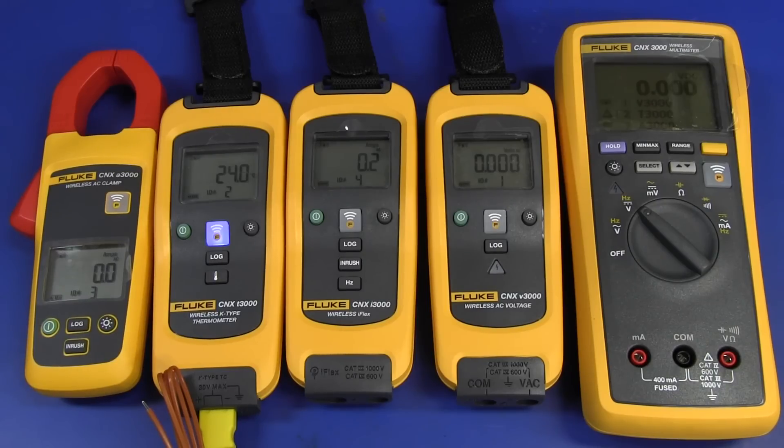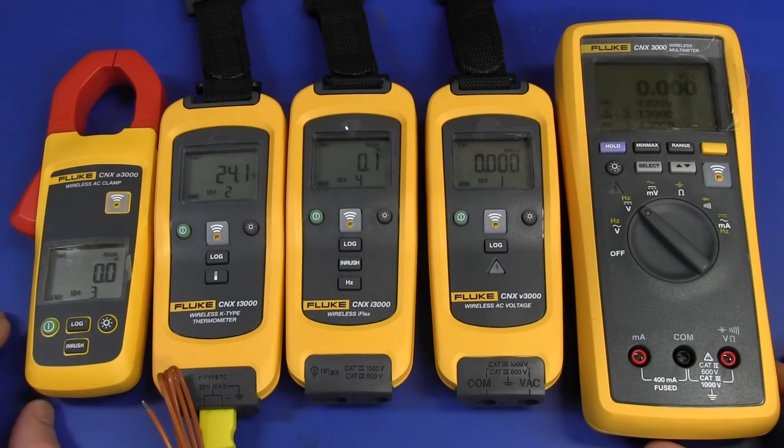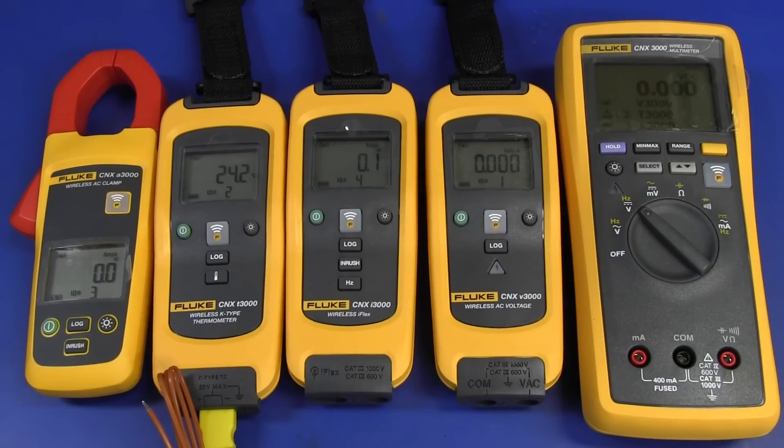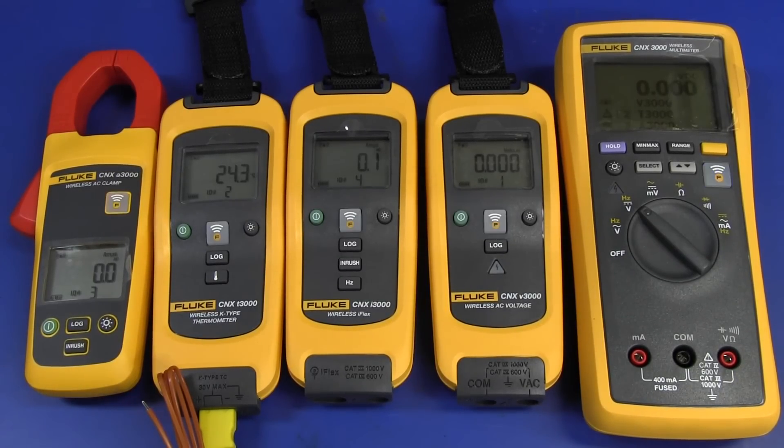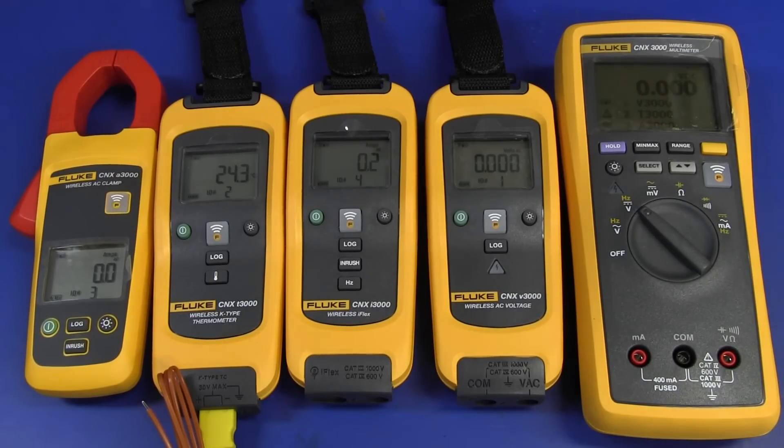So there you have it. That's the Fluke CNX 3000 Wireless Multimeter Series. Very, very funky. Yeah, haven't used them yet, so I can't give you a review on these things yet. But very interesting, very well built, as you'd expect from Fluke. Absolutely first class and worth every cent, I'm sure. Hope you enjoyed it. If you want to discuss it, jump on over to the EEVblog forum. Catch you next time.